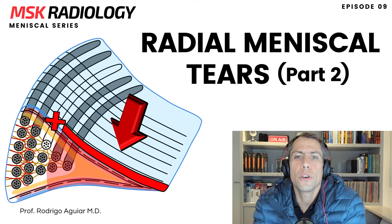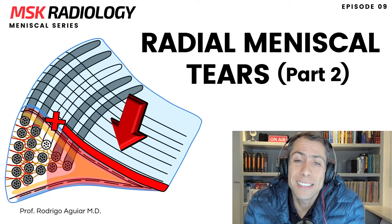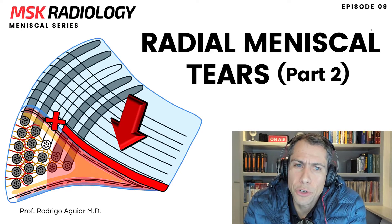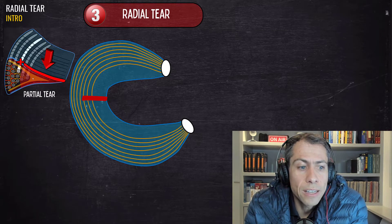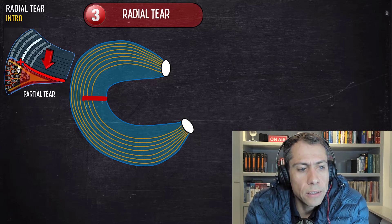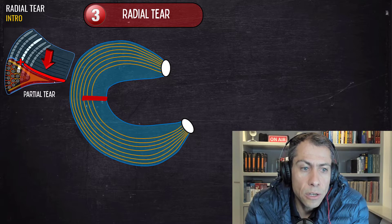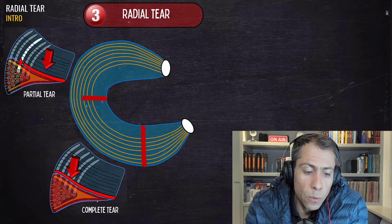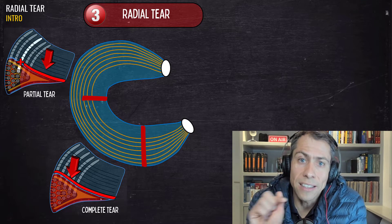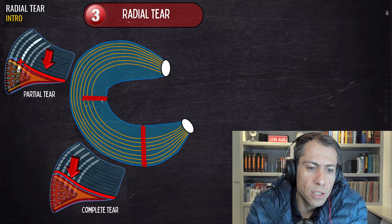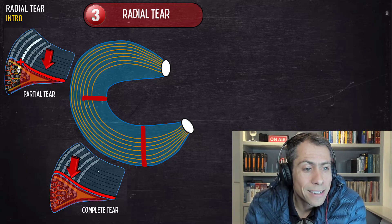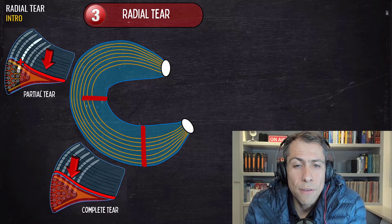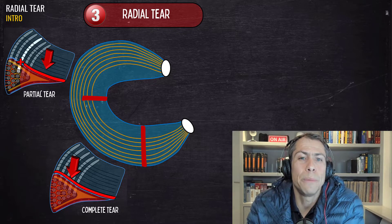Hi everybody. Today let's continue talking about radial meniscal tears and how we can see them on the MRI of the knee. A radial tear can be partial — when it does not compromise the full extension of the meniscus in the short axis — or complete, when it compromises the entire extension of the meniscus in the short axis. The partial tears tend to present a more benign behavior than complete tears.